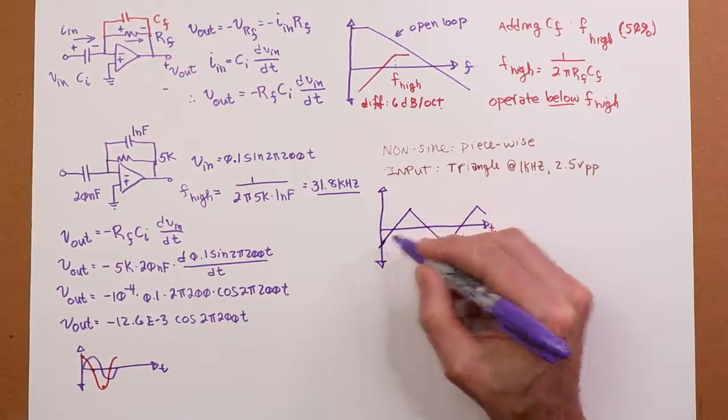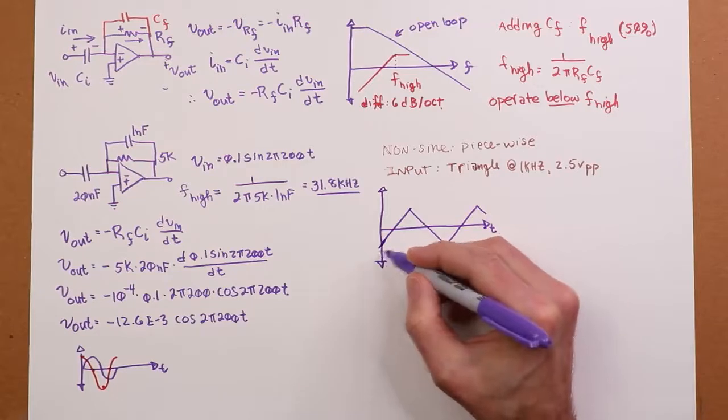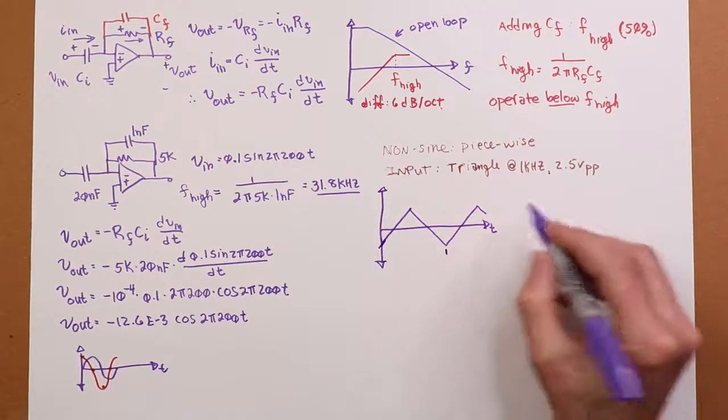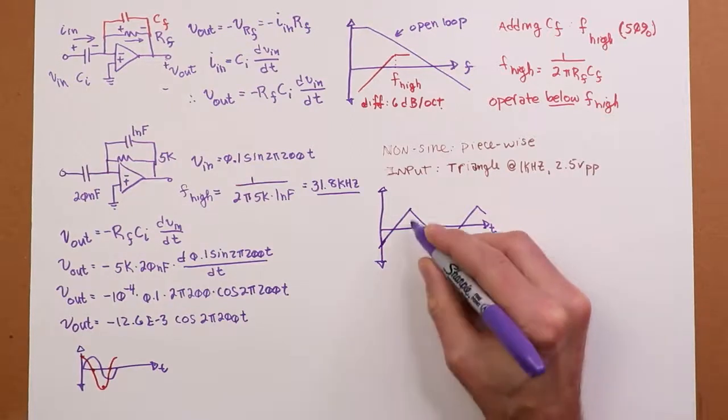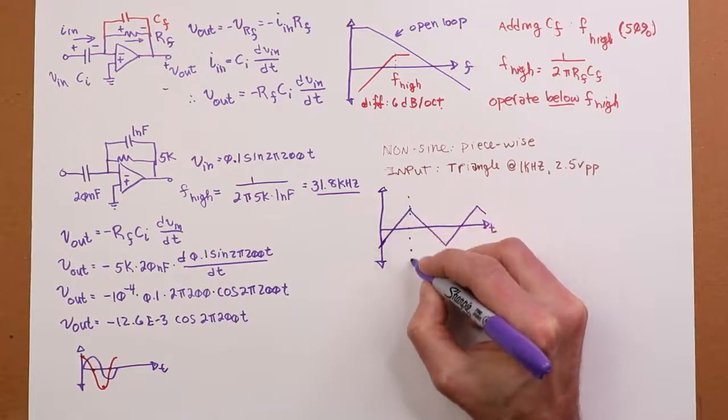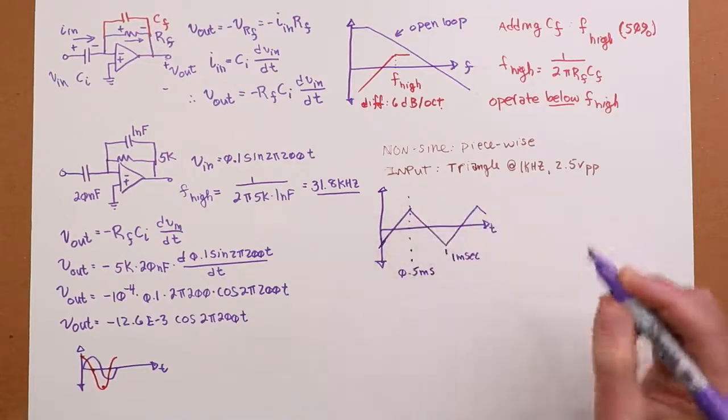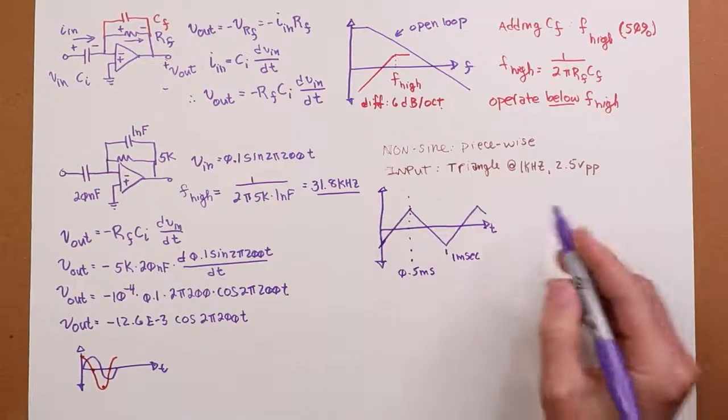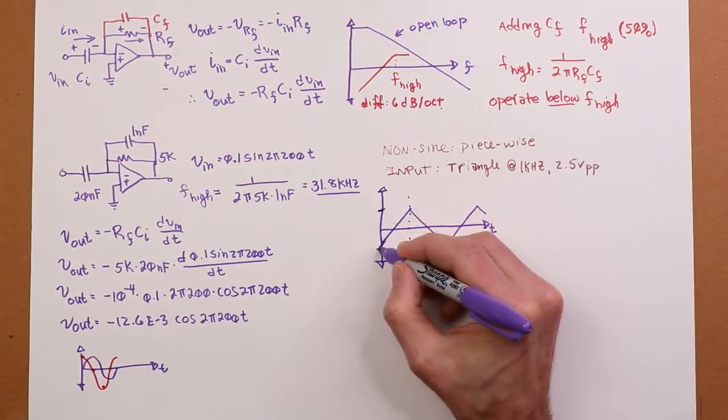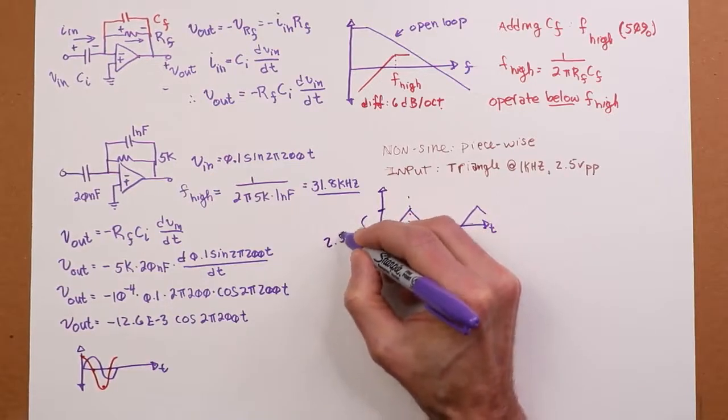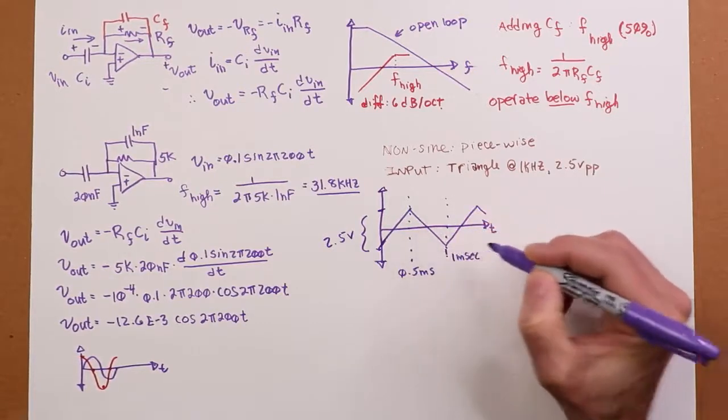So that looks like this. If we go peak to peak, from negative peak to negative peak right here, that would be, because it's 1kHz, 1 over that is 1 millisecond. Halfway through would be half a millisecond. This is zero. The amplitude, as we said, would be 1 and a quarter volts peak, so from here to here. That's 2.5 volts peak to peak.